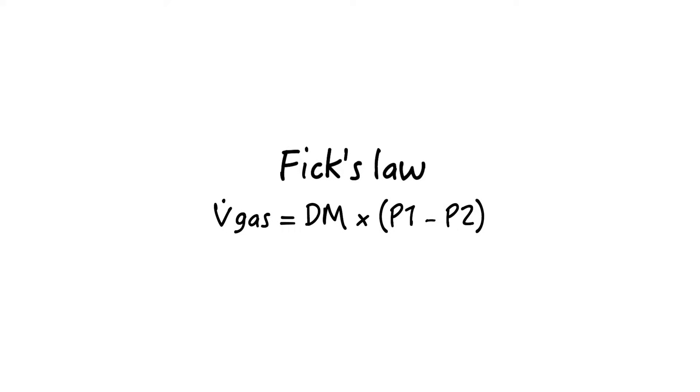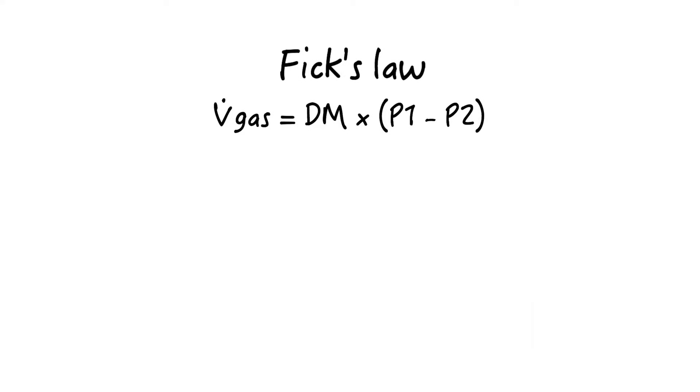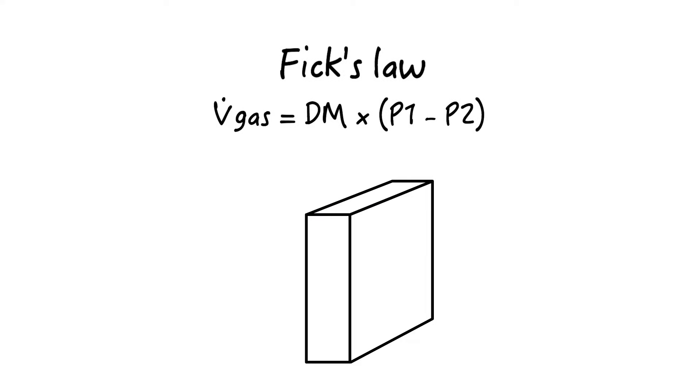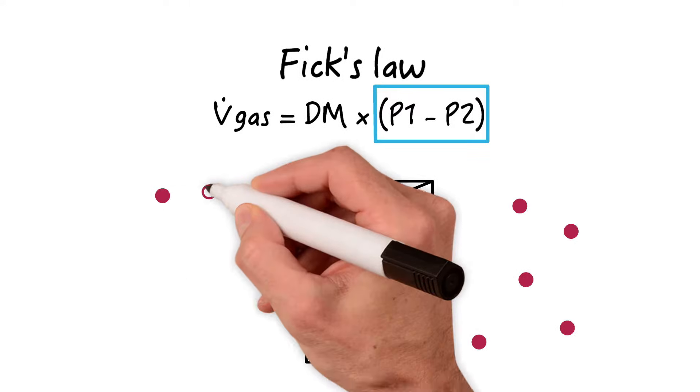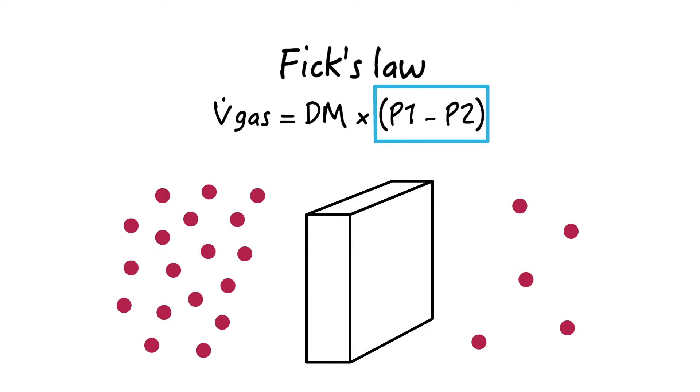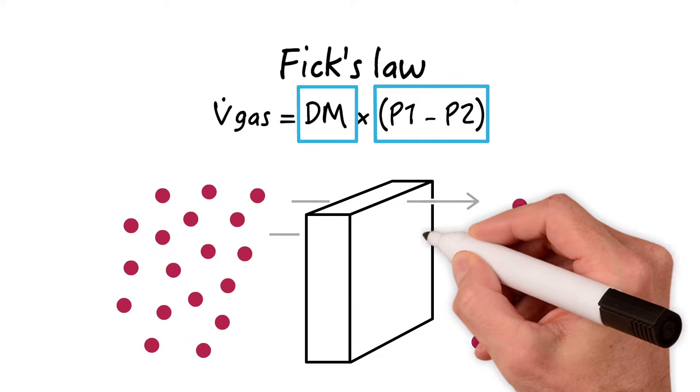The rate of gas transfer across a tissue plane or membrane is directly proportional to the difference in partial pressures of the gas on the two sides of the membrane and the membrane's diffusing capacity.